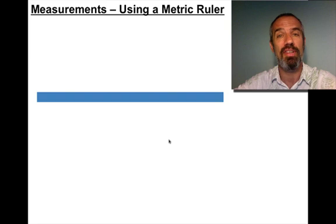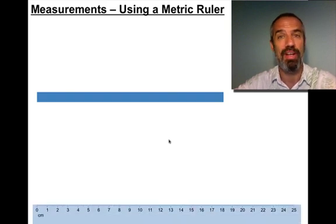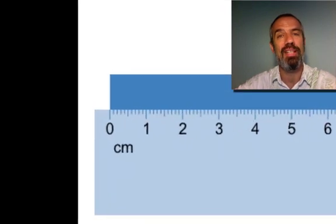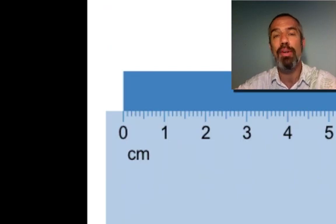Let's say we're going to measure the length of this blue strip and we grab the ruler that's available to us, which would generally look like this. Notice one thing about this to begin with: the zero is indented. That's how most rulers are, not all of them, but most of them.